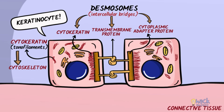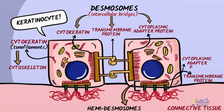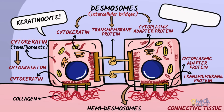Another group of intercellular junctions called hemidesmosomes provide adhesion between the keratinocytes and the connective tissue. Hemidesmosomes also have a set of transmembrane and cytoplasmic adaptor proteins attaching to the tonofilaments. Forces being applied to the oral epithelium are uniformly distributed over a wide area with the help of desmosomes and hemidesmosomes.